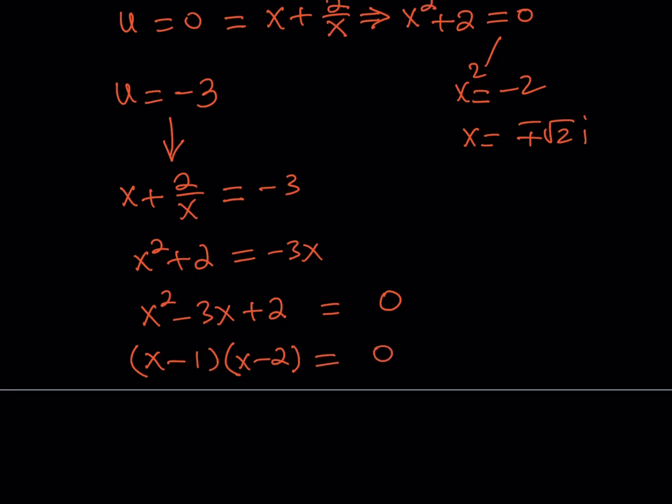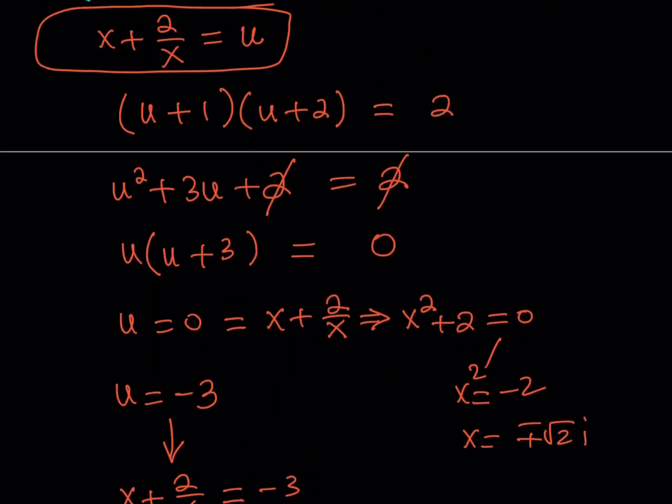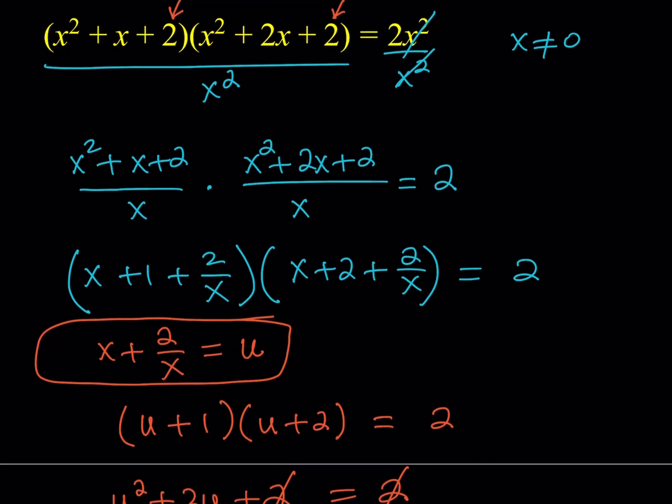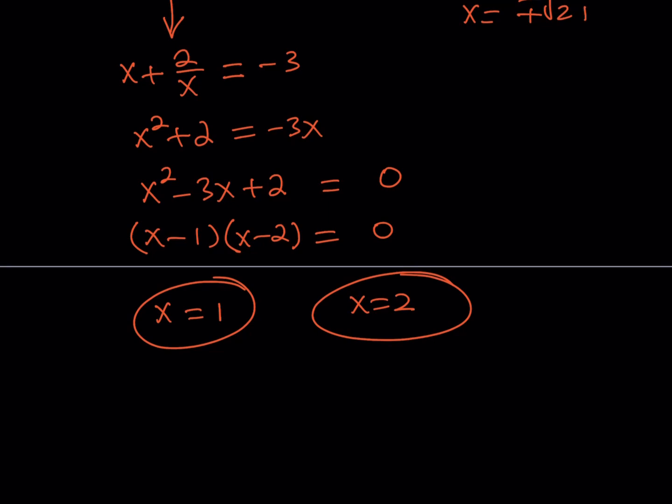And from here, we get two possible values, which are x equals 1 and x equals 2. Now, are those valid solutions? You may want to just go back and check with the original problem because in the original problem there are no issues. Because we don't really have, we didn't do anything problematic. There's no radicals. This is all polynomial. So it should work. And we know that x does not equal 0. So x equals 1 and x equals 2 are valid solutions and they are real.